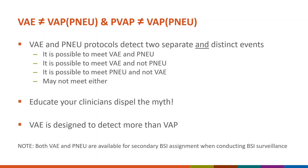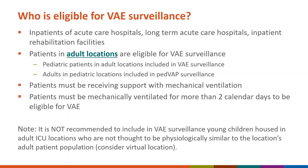Although with the right combination of criteria you can identify a possible ventilator-associated pneumonia or PVAP, the VAE protocol is designed to detect more than just VAP. VAE surveillance can be performed for inpatients in acute care hospitals, long-term acute care hospitals, and inpatient rehabilitation facilities who are housed in adult locations and who are receiving support with mechanical ventilation. VAE is location-based, not age-based, so pediatric patients housed in adult locations are included.